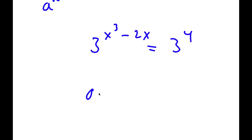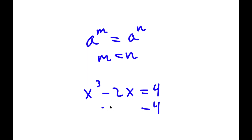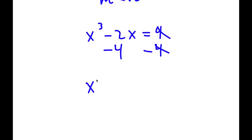Now if I have something in the form a to the power of m is equal to a to the power of n, this means that m is equal to n. So in this case, x to the power of 3 minus 2x is equal to 4. To solve this, I subtract 4 on both sides, and I have x to the power of 3 minus 2x minus 4 is equal to 0.